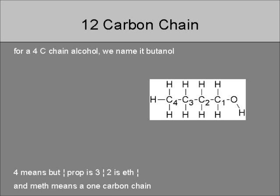For a four carbon chain alcohol, we name it butanol. Four means but, prop is three, two is eth, and meth means a one carbon chain.